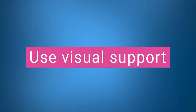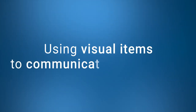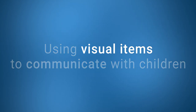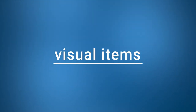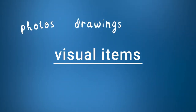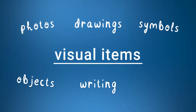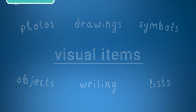Use visual support. Visual support refers to using a picture or other visual item to communicate with a child. Visual supports can be photographs, drawings, symbols, objects, written words or lists. Visuals can help to make verbal information more meaningful for autistic children.